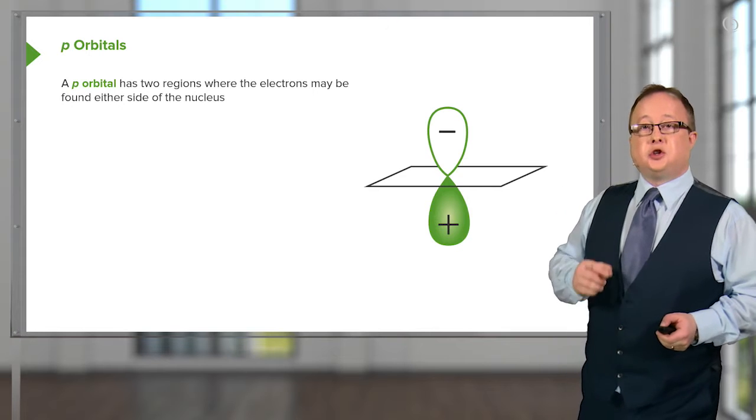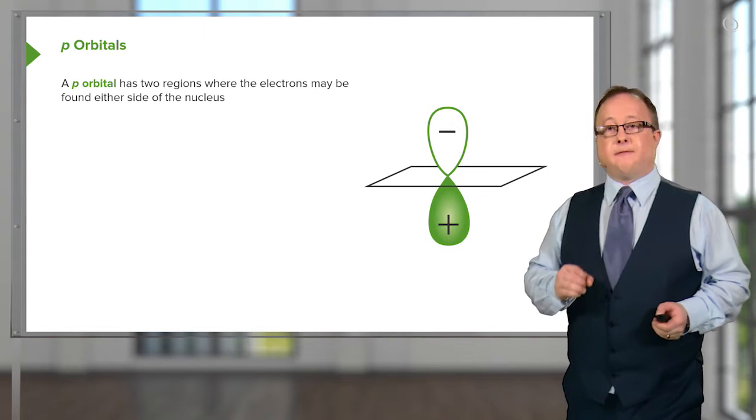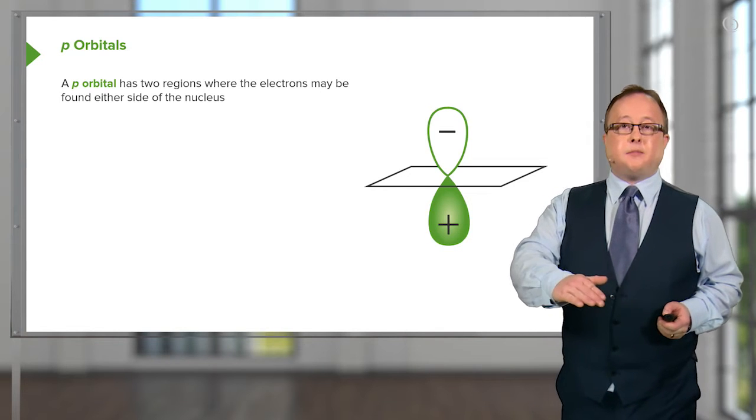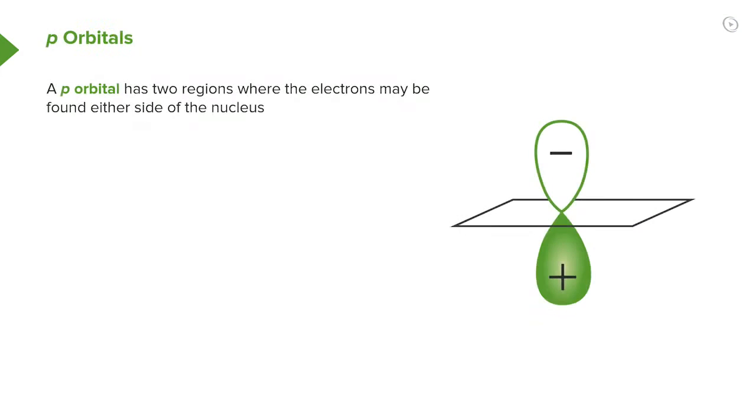A p orbital has two regions where electrons may be found on either side. Note what I've done is we've got a plane through the node of the p orbital, as shown here. And along that plane, there exists no electron density, as it contains the nucleus. But again, what is the significance of the negative and the positive charges?